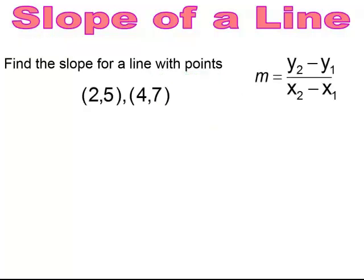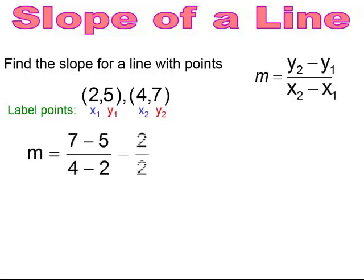Pause and try. I like to label my points. It doesn't matter which is x1, y1 or x2, y2, but make sure the x1 is the x position and y1 is the y position in the ordered pair. Substitute into the formula and you should get 2 over 2, which simplifies to 1. So the slope is the whole number 1.